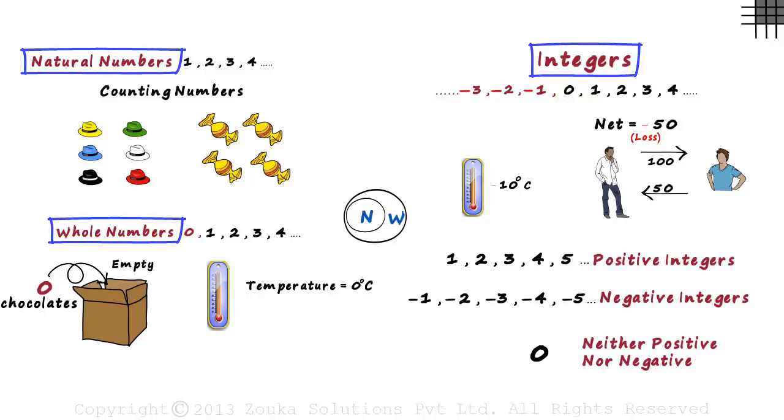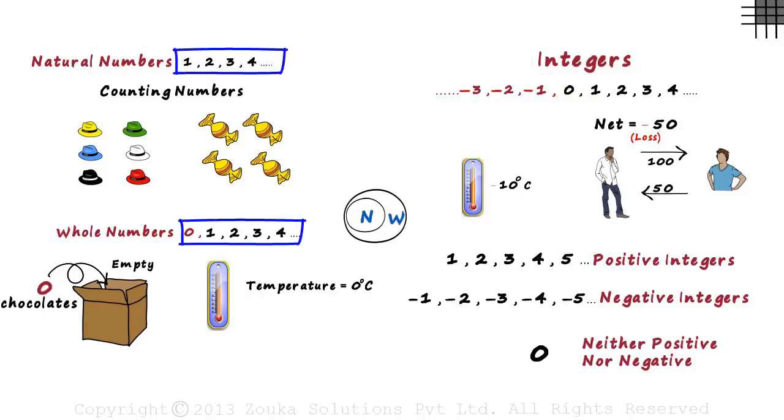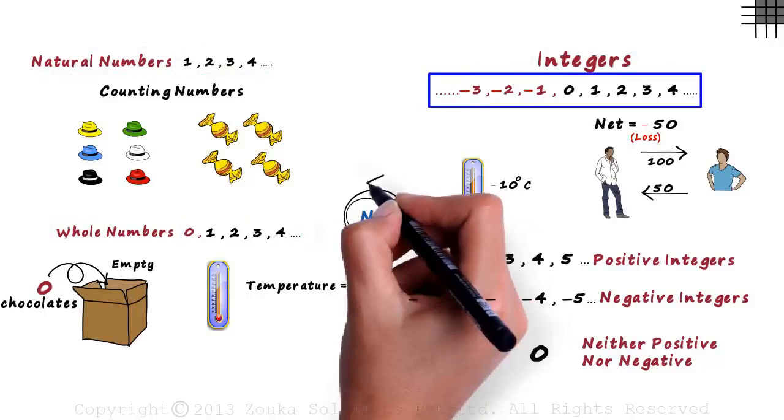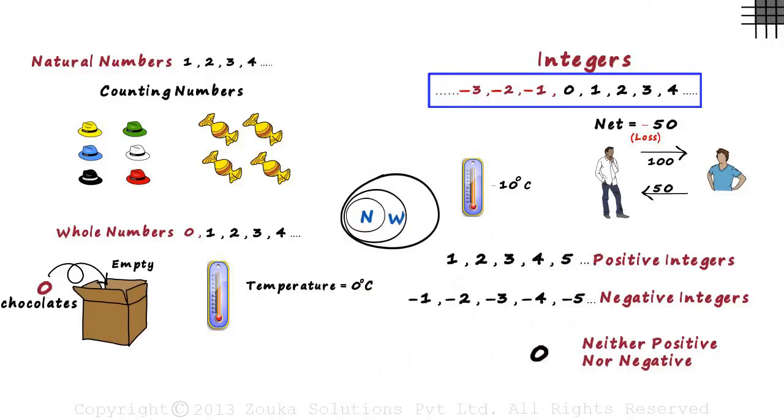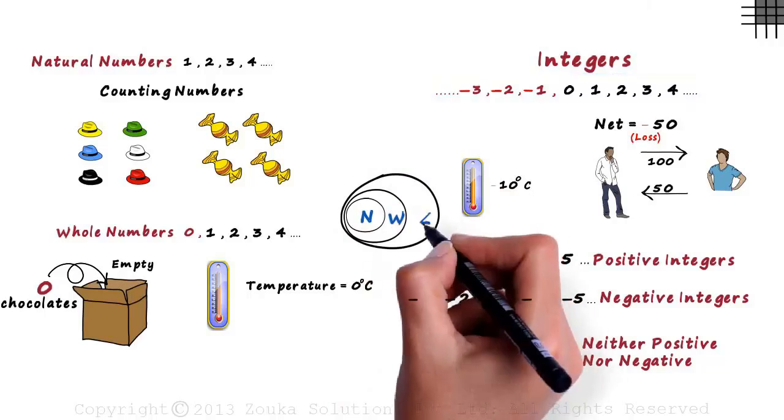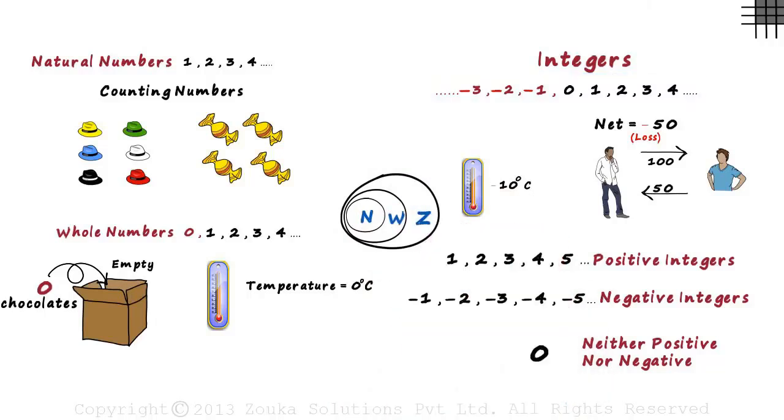Now look at all three of them together. It tells us that all natural numbers and whole numbers are integers. The set of integers would look something like this. And the set of integers are represented by the letter Z. Now we know what integers are and why they are used.